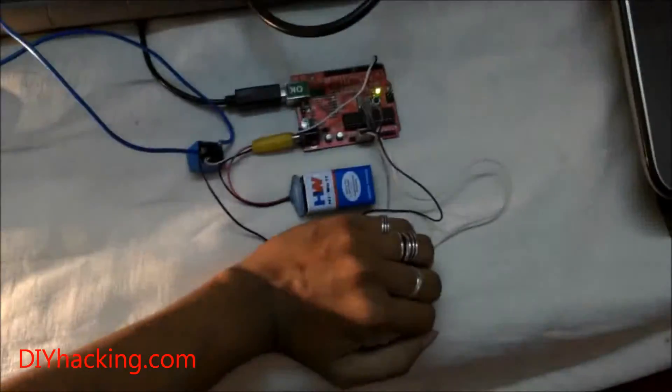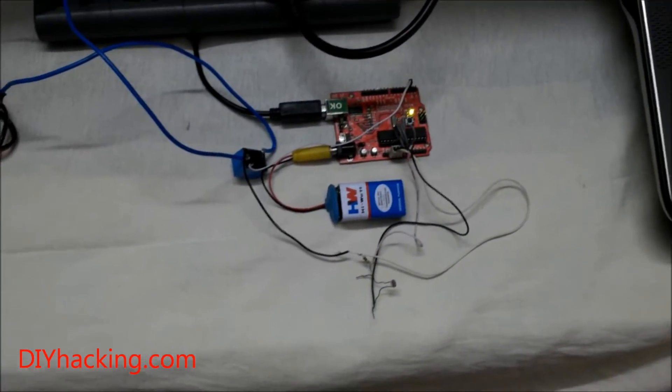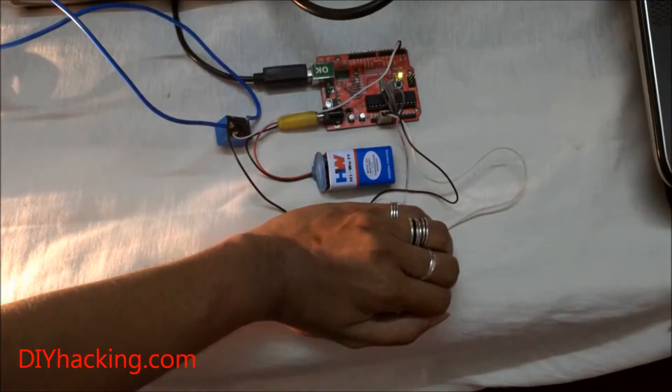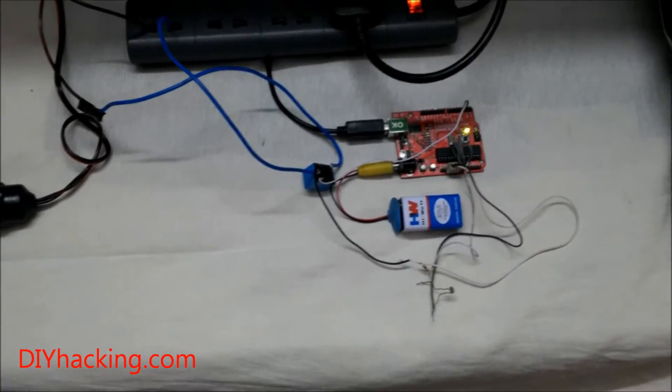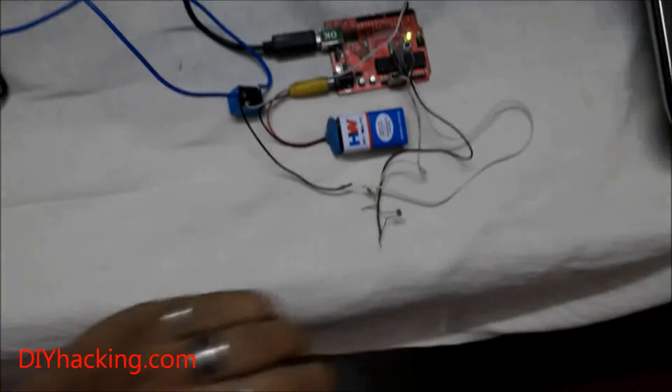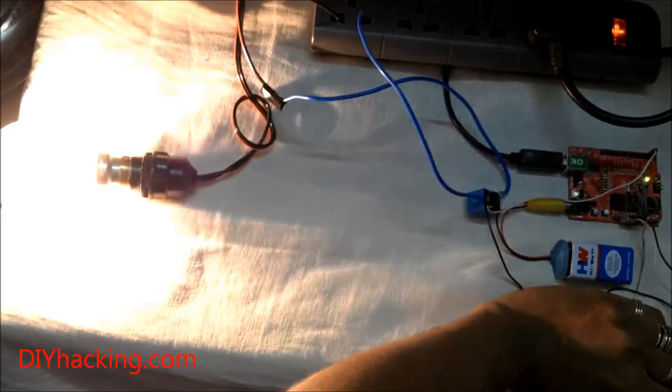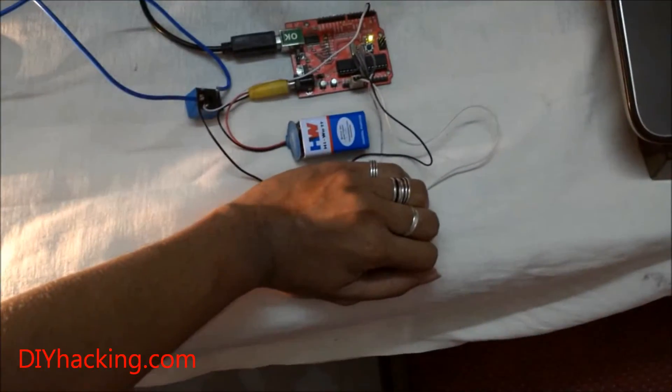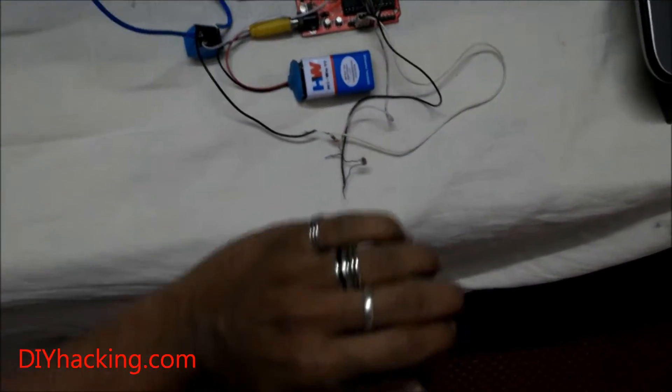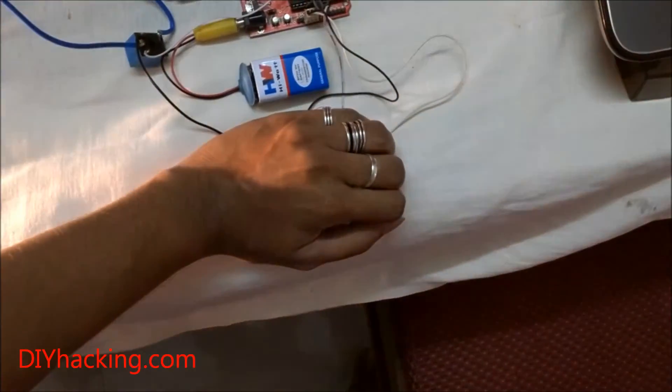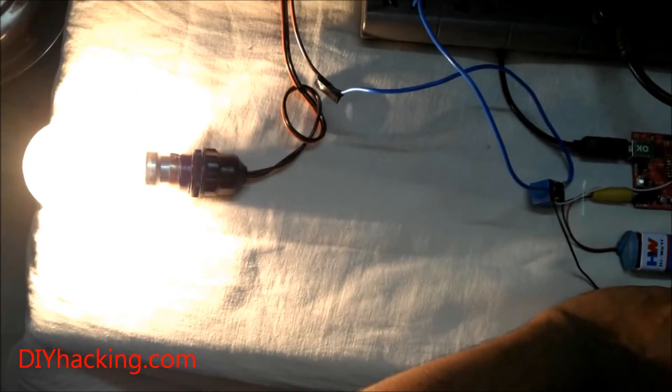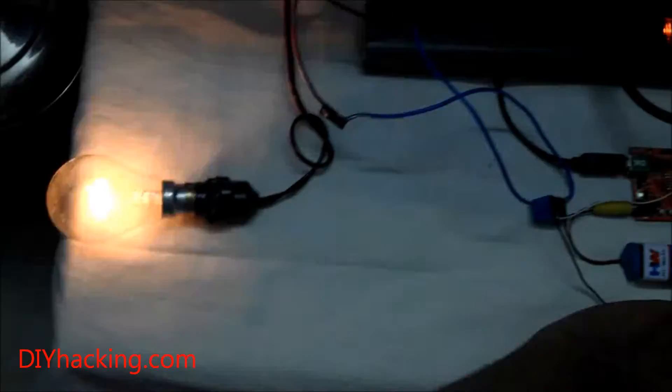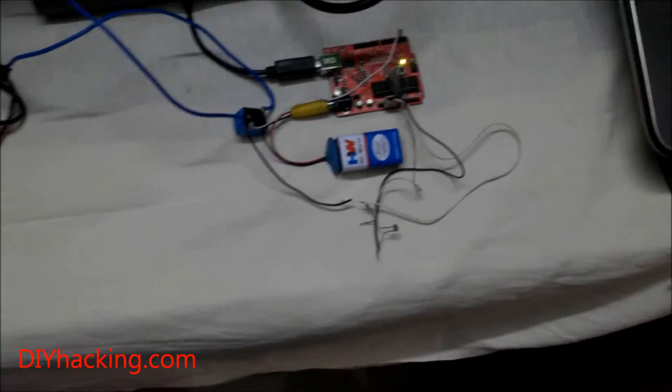When I take my hand off, it turns the bulb off. It's very simple. Since I've set a threshold value for light intensity, whenever it falls below that, it turns the light bulb on. When the shadow of my palm falls on the LDR, the light intensity going into it decreases, so that's why it's turning the light bulb on.